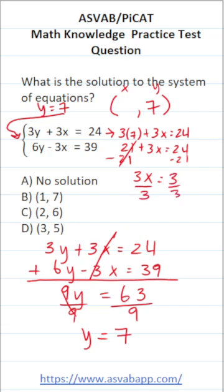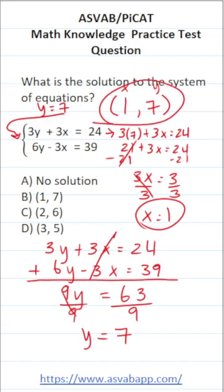Divide both sides by 3 to get x by itself. This says x equals 3 over 3, which is 1. So we know x is 1. So our solution to this system is going to be 1, 7, which is answer choice B.